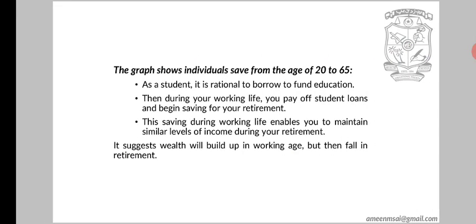The graph shows that individuals save from the age of 20 to 65. As a student, it is rational to borrow to fund education. Then during your working life, you pay off the student loan and begin saving for retirement. This saving during your working life enables you to maintain similar levels of income during your retirement.